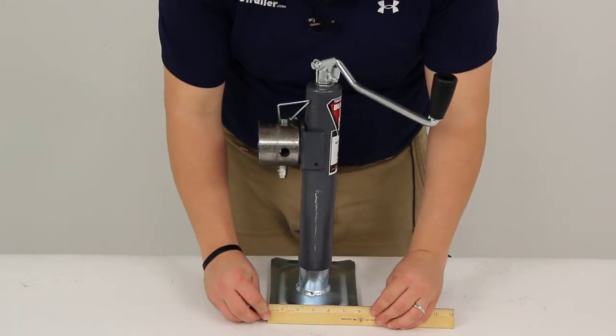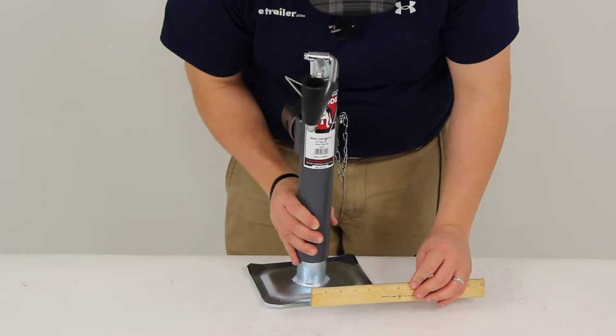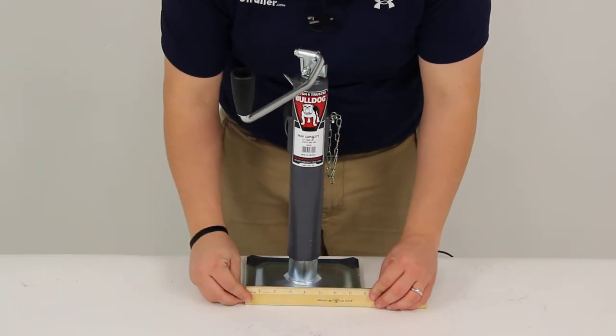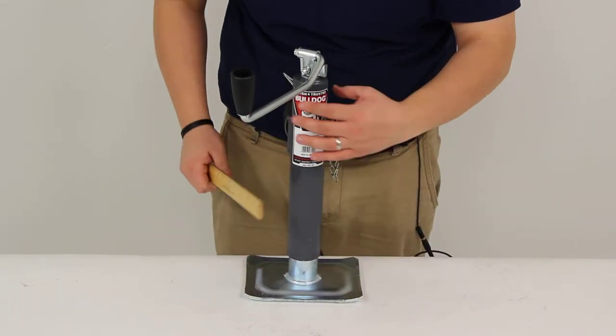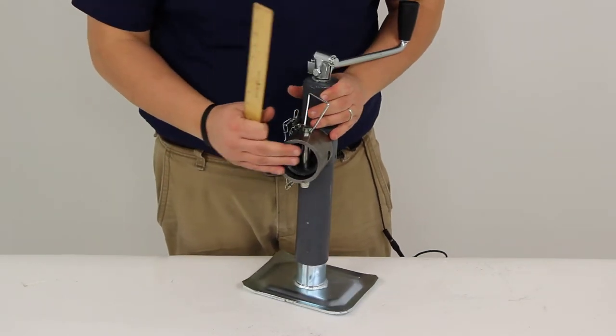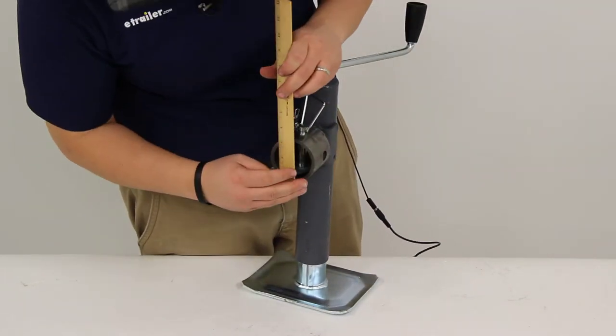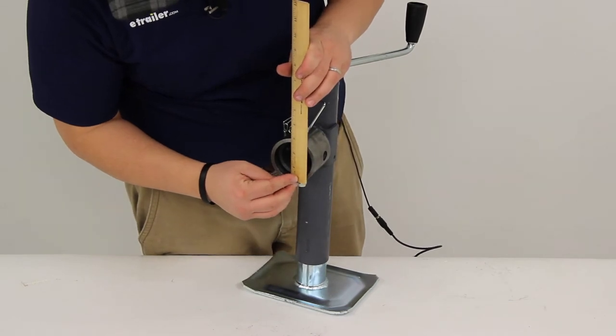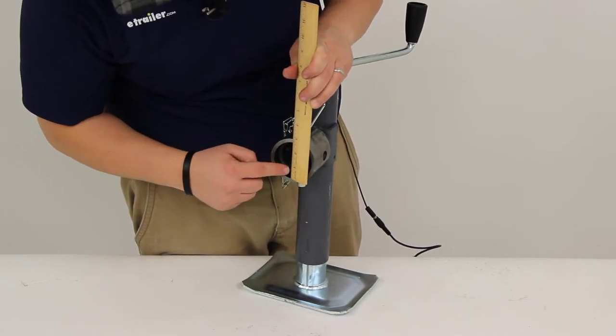The foot plate is going to measure 6 inches by 8 inches. And our weld plate here has a diameter of 2.5 inches from inside to inside.